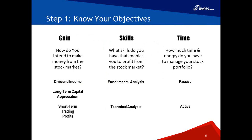How do you define your objectives? I'll break it down into three simple parts: gain, skills, and time. Let me start with gain. Ask yourself: how do you intend to make money from the stock market? Do you invest for dividend income, or do you invest for capital gains? For capital gains, the next question is: how much capital gains would you like to achieve? This is a very subjective question with no right or wrong answer — it takes some learning and soul-searching.